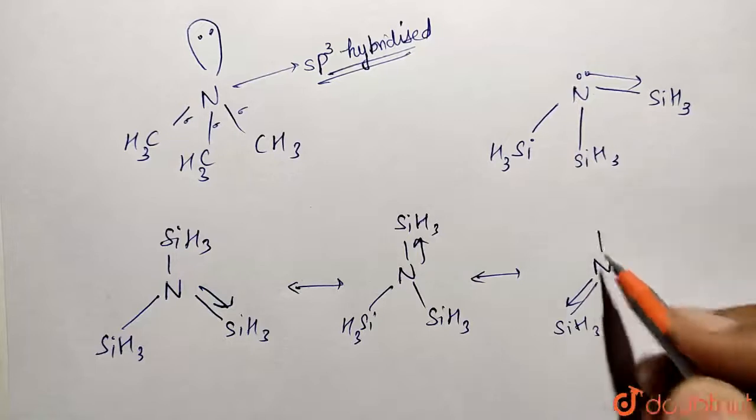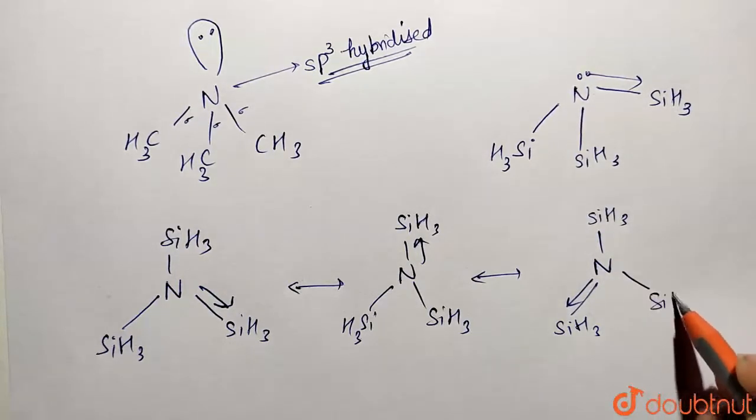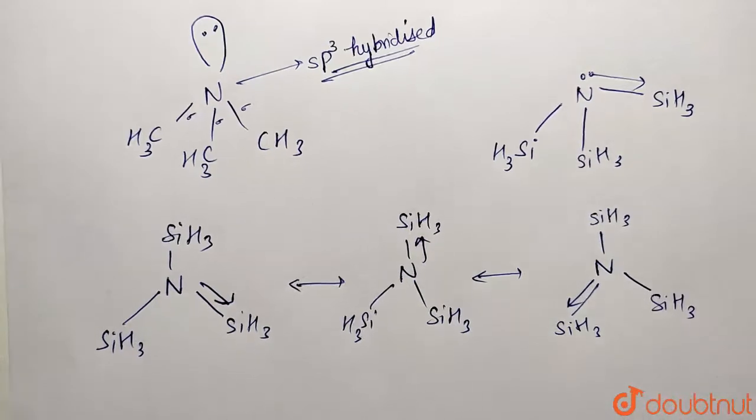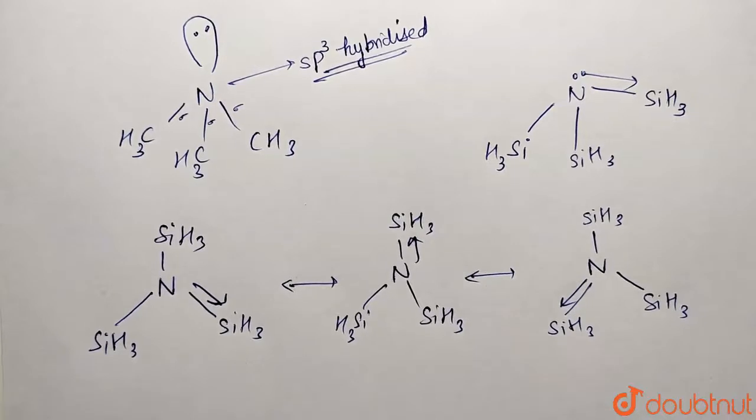So these are the representative structures. Now the reason is very simple: as soon as the back bonding takes place, the molecule becomes planar. So the reason is that back bonding makes the bond stable and structure becomes planar.